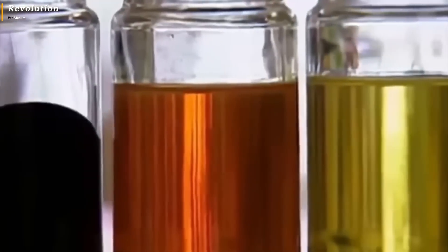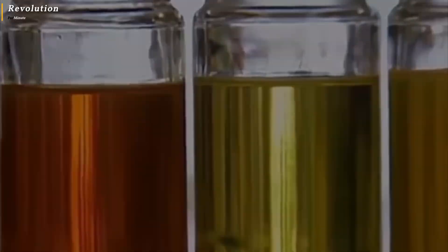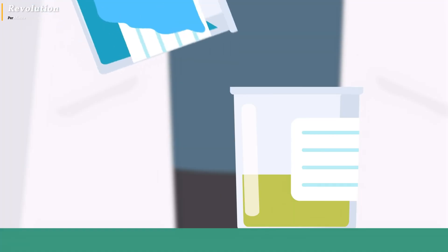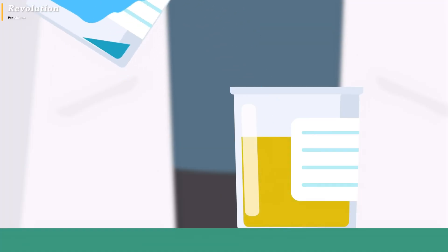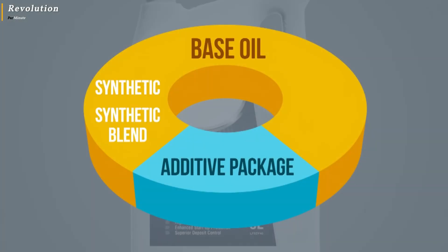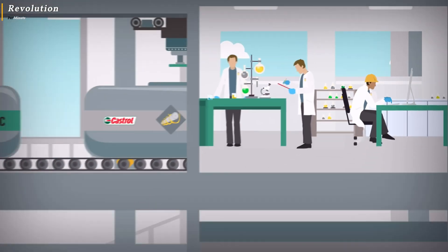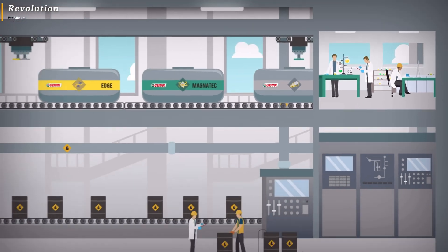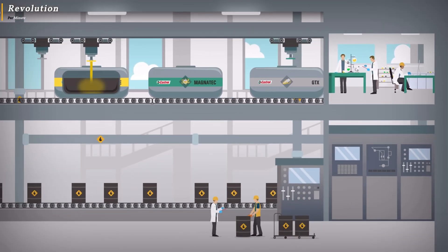After the refining process, the next stage is the addition of additives to the oil. These include various types of ingredients to improve engine performance and protection. For example, detergents are added to keep the engine clean, and antioxidants help prevent oxidation.